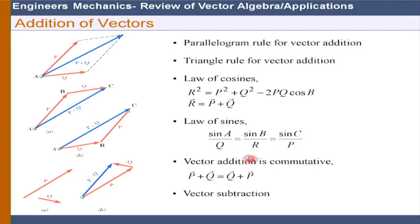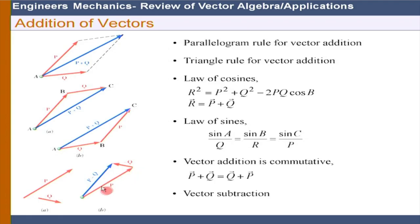Remember: vector addition is commutative, meaning we can add P + Q or Q + P and the result will not change. Vector subtraction is also illustrated: P minus Q gives the resultant P − Q.